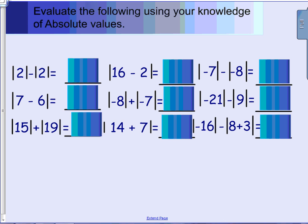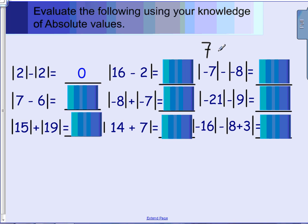Sometimes you'll see a problem where you find the absolute value of each individual number and then solve. For example, the absolute value of 2 minus the absolute value of 2 is 2 minus 2, which equals 0. And the absolute value of negative 7 minus the absolute value of negative 8 is 7 minus 8, which equals negative 1.